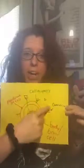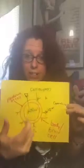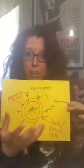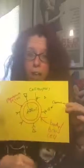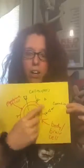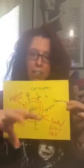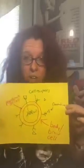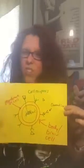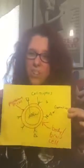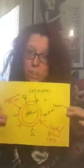So cannabinoids — these are the different chemicals like THC — fire off and attach to these receptors, and this starts all of those little reactions within the cells that have us feel the way we do when we are indulging in cannabis.